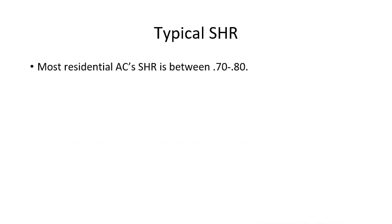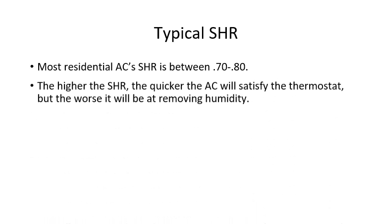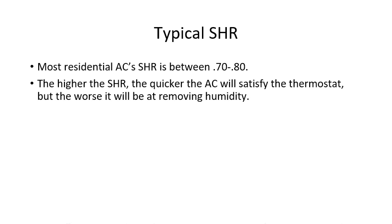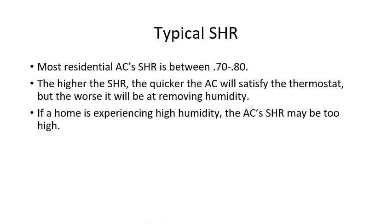Your typical residential air conditioning system sensible heat ratio is between 0.7 and 0.8. The higher the sensible heat ratio is, the quicker that system will satisfy the thermostat, because it's removing more sensible heat than latent heat — it's taking temperature away from the house. But it won't be very good at removing humidity. So if a home is experiencing high humidity, that may mean the AC's sensible heat ratio is too high — it's satisfying the thermostat before it can run long enough to remove humidity.